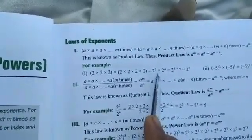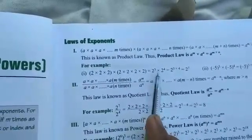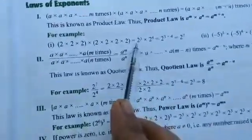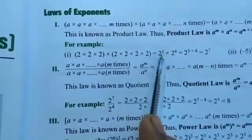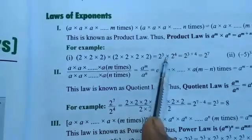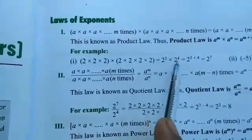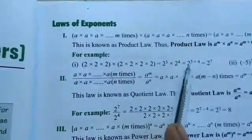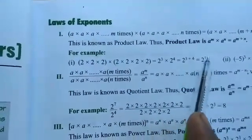Now it becomes 2 raised to power 3 multiplied by 2 raised to power 4. There is a sign of multiply, that's why the powers will be added if the base is the same. The base is 2 in both cases. The powers are 3 and 4, and the sign is multiply, so we sum the powers. It becomes 2 raised to power 3 plus 4 — that is 2 raised to power 7.